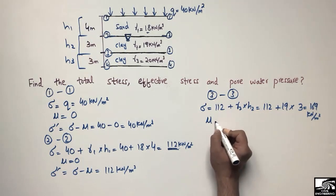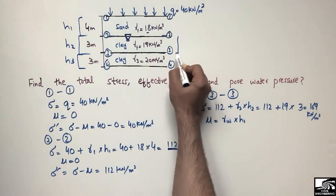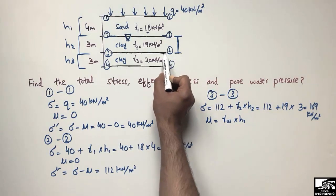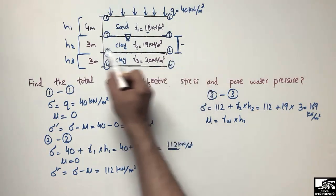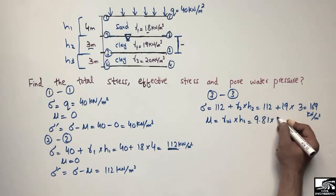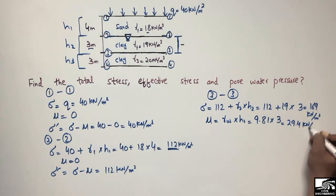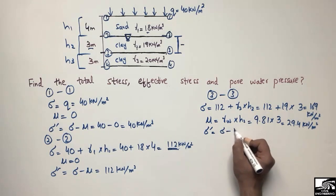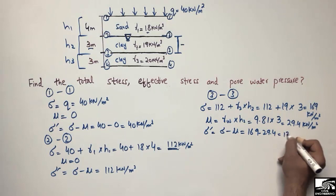The pore water pressure at point 3-3 is calculated as gamma_w multiplied by h2, where h2 = 3 m is the height from point 2-2 (where the water table starts) to point 3-3. So pore water pressure = 9.81 × 3 = 29.4 kN/m². The effective stress equals total stress minus pore water pressure: 169 − 29.4 = 139.6 kN/m².